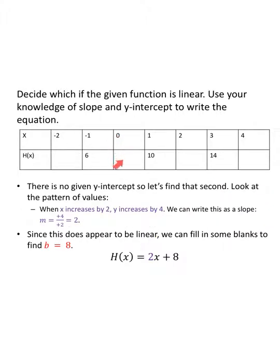There's no y-intercept given here, so we'll come back to that. Let's see if we can find our m value. Looking at the pattern of values: x values go from negative one to one to three — increasing by two. At those same x values, y values are increasing by four. We can write this as a slope: change in y over change in x is four over two, which equals two. There is consistency in addition, so this is a linear function.